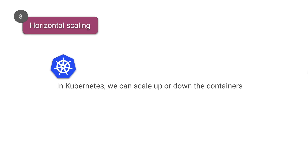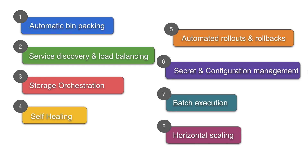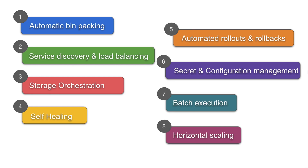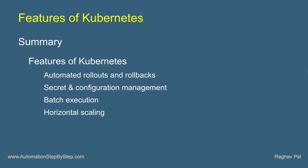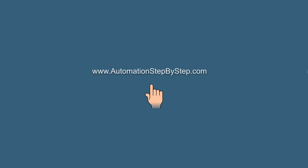Horizontal scaling allows Kubernetes to scale up or scale down containers using commands, from a dashboard, or automatically based on CPU usage. These are the eight major features of Kubernetes. In this session we covered automated rollouts and rollbacks, secret and configuration management, batch execution, and horizontal scaling. In the coming session we will learn the architecture of Kubernetes. Thank you for watching.